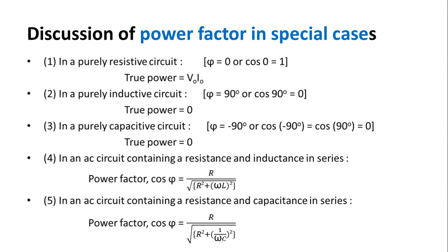Now we shall discuss the power factor in special cases. The power factor is decided by the phase angle φ, the phase difference between the applied voltage and the corresponding current. Case 1: in a purely resistive circuit, the voltage is in phase with the current, so φ = 0, cos φ = cos 0 = 1, and true power = V₀ × I₀. That means the true power equals the apparent power.